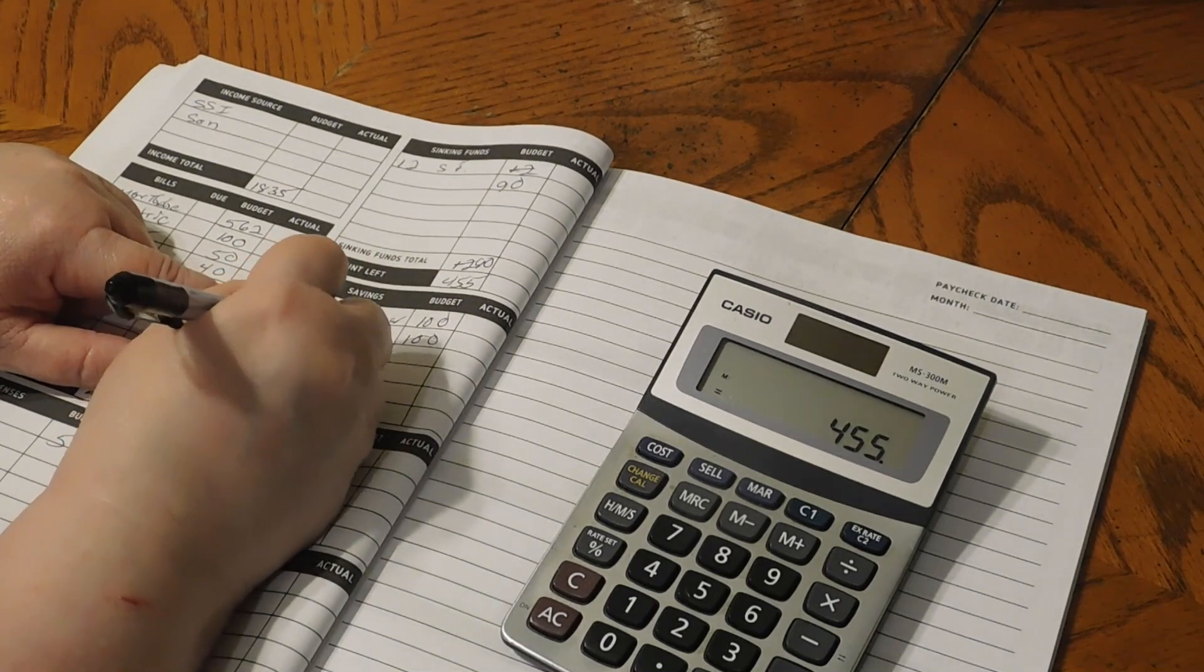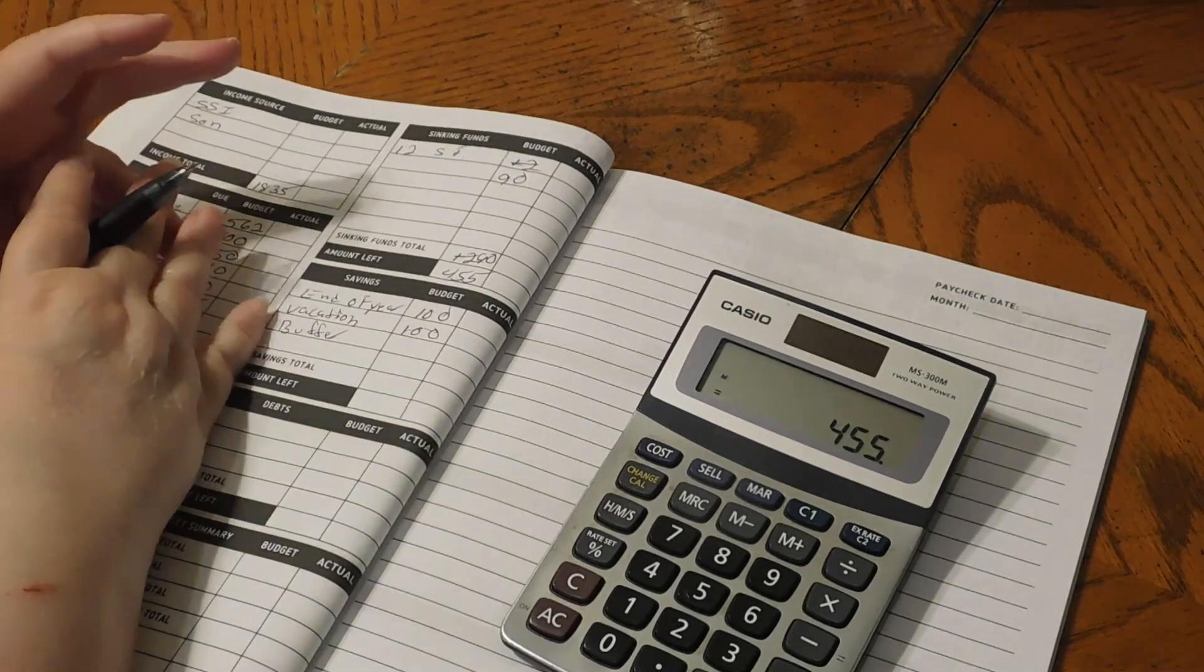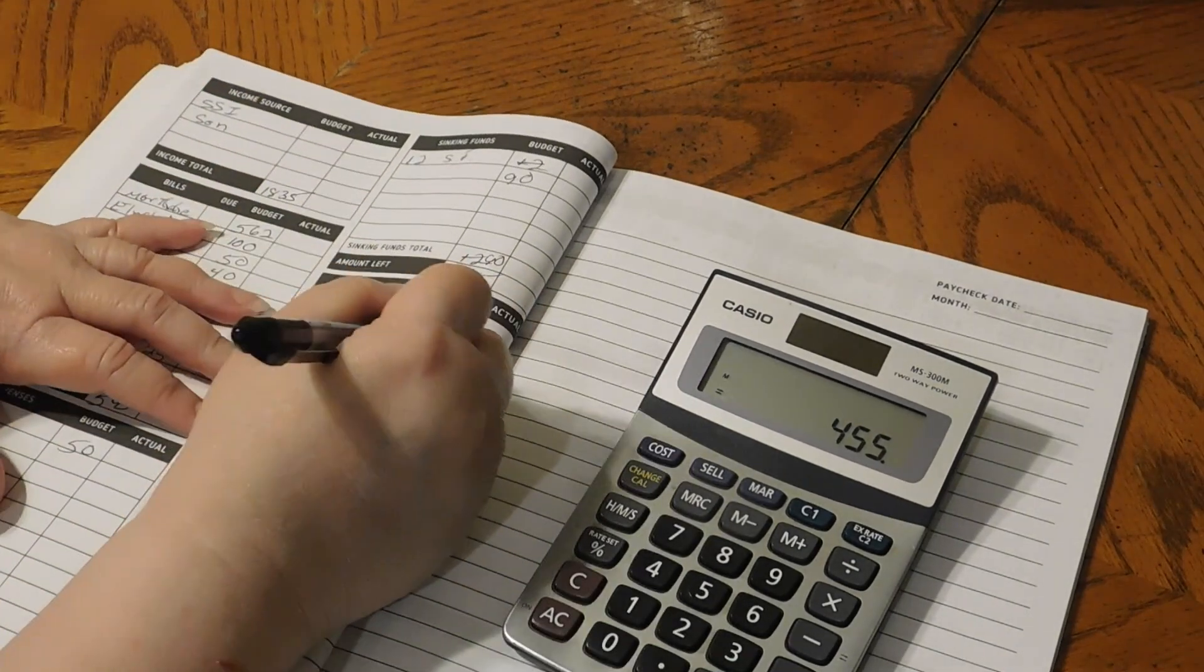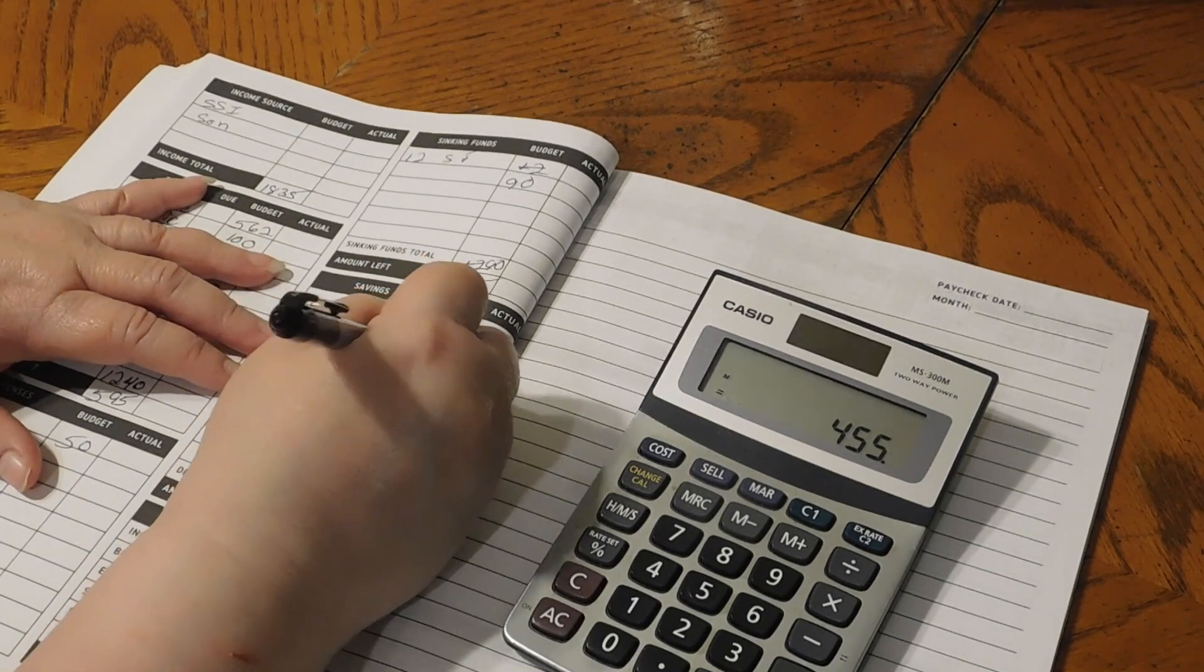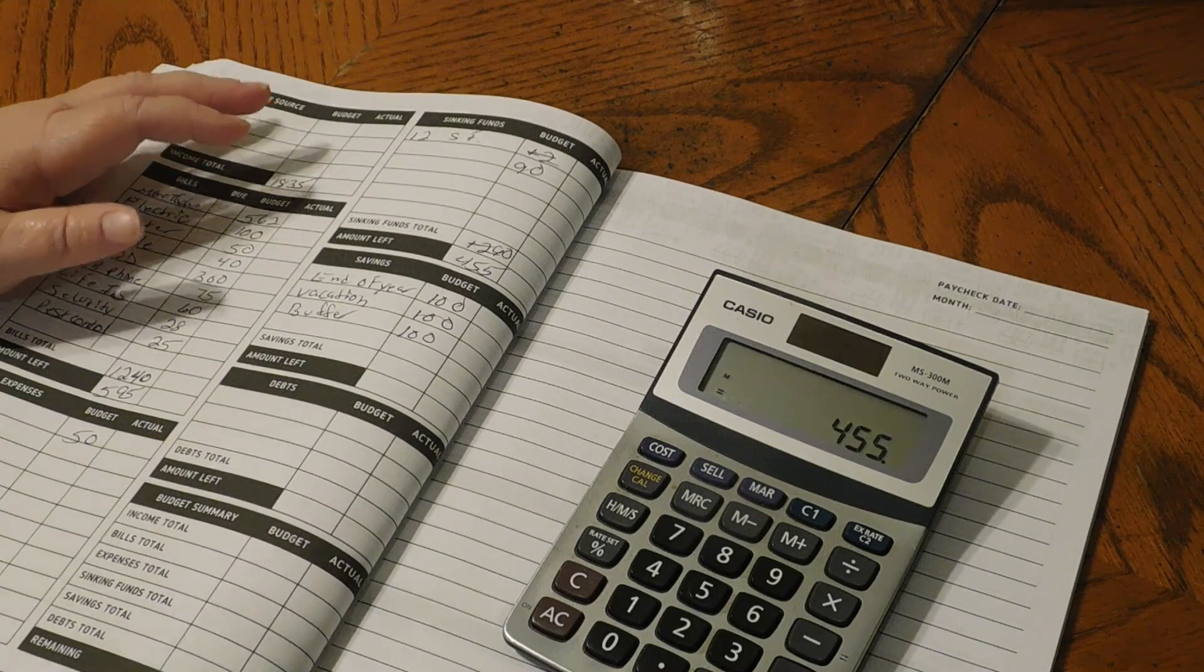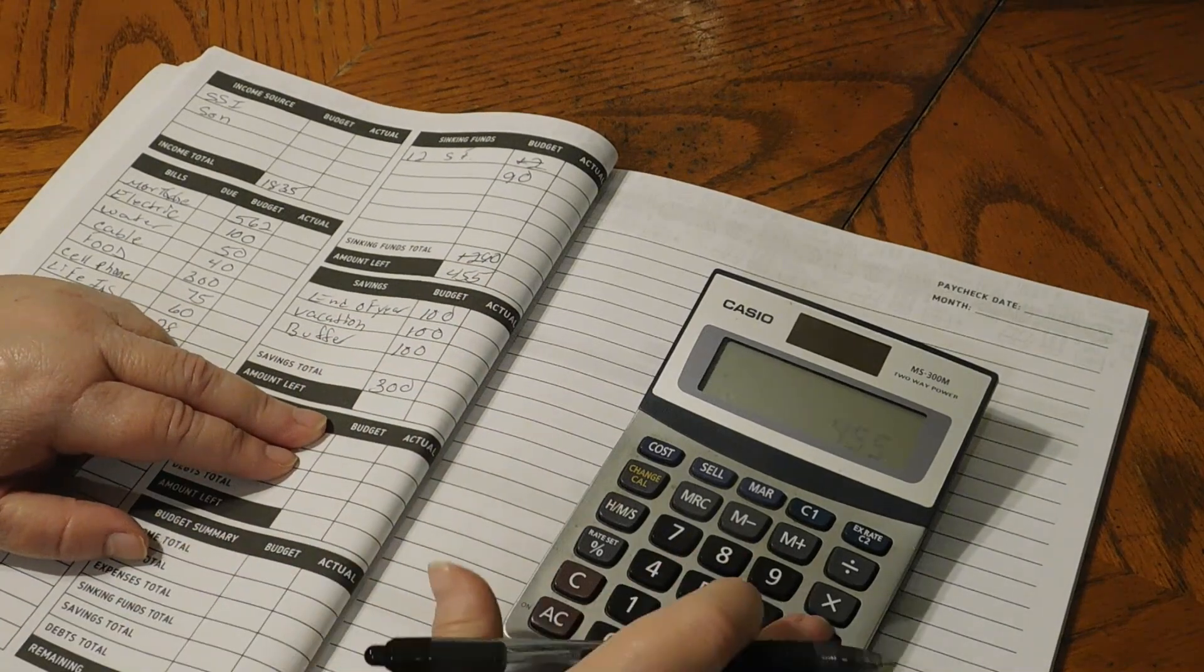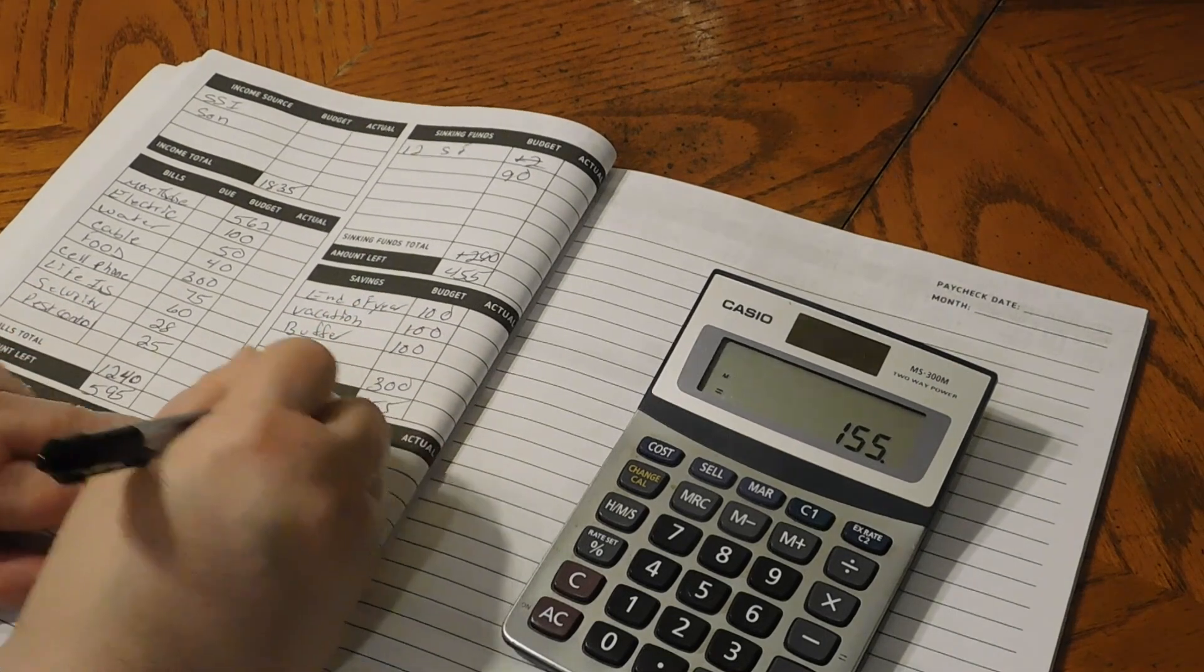And we have a buffer in our account. This is in case we go over in food, or we go over in pet food, or we just need a couple extra things in the house. We take it from that buffer. And whatever's left from that buffer that we don't use at the end of every month, we transfer that into our savings, which is our mini emergency fund. So that is $300 minus $300 gives us $155.